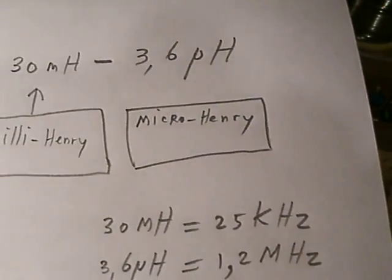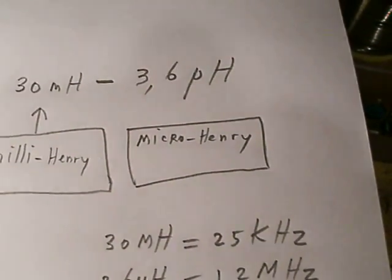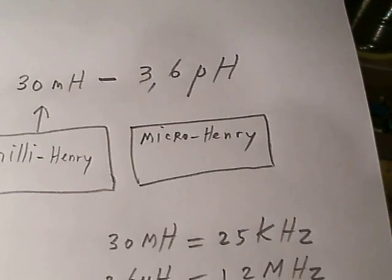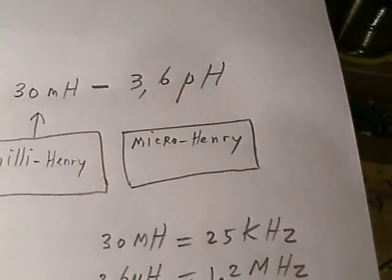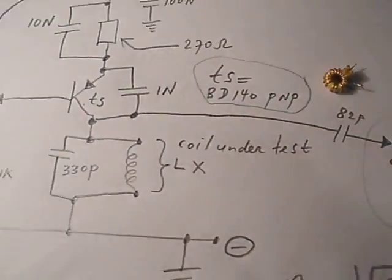To low inductance coils in the µH range. And 3.6 µH is the lowest value that this oscillator can handle to keep oscillating.